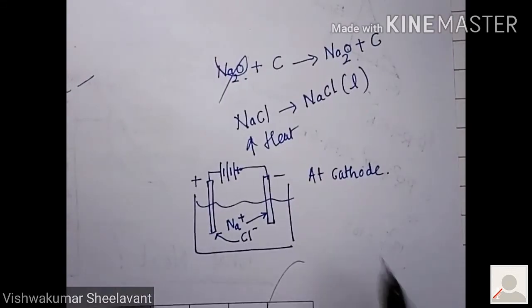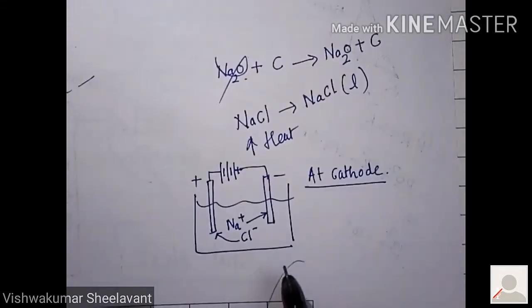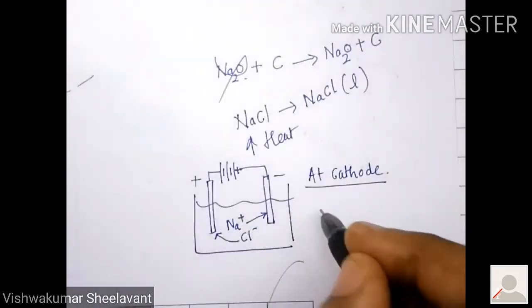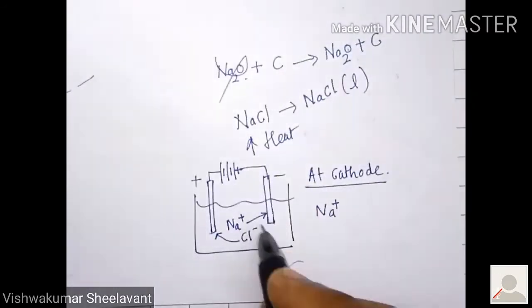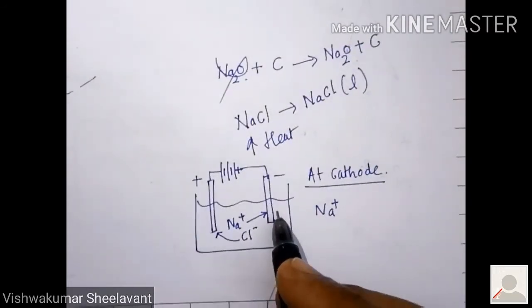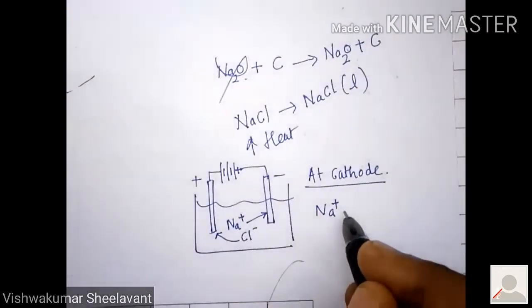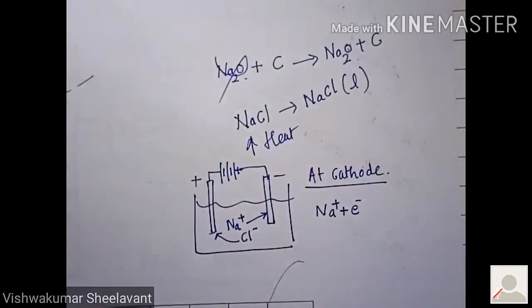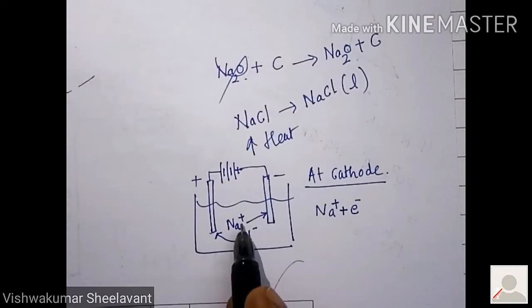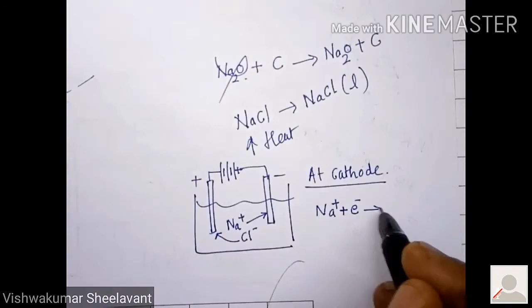At cathode, Na+ goes here and this is negatively charged electrode. From there, it will take one electron. Electrode will give it one electron and it will become Na.